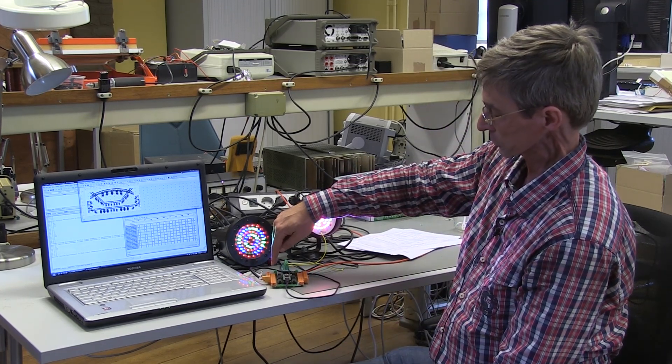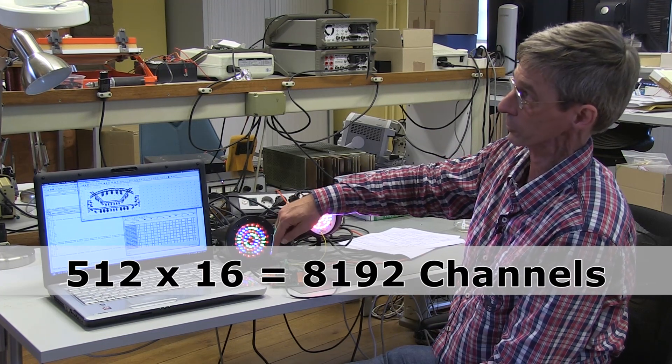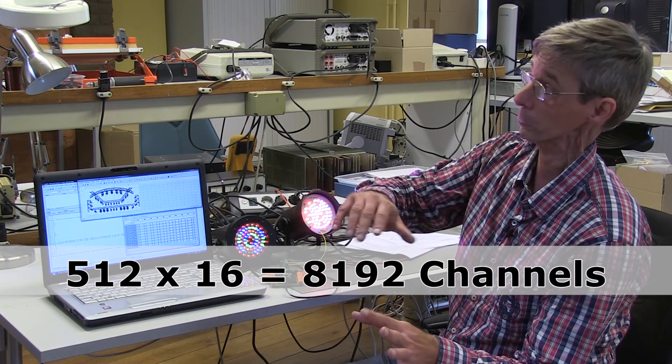How many channels do you have now? Each DMX has 512 channels so multiply by 16 is a lot.